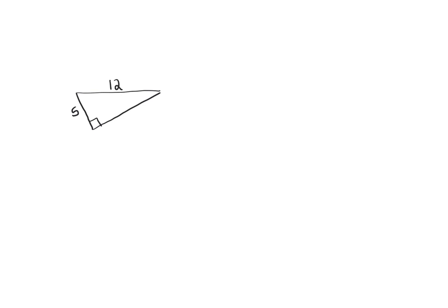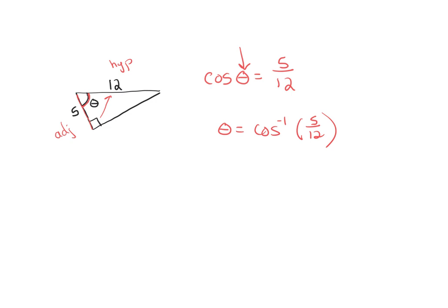Let's do one more. Draw a right triangle — this side length is 5, this one is 12 — and we want to find this angle measure. In relationship to the angle, we have the adjacent side, and this side is across from the right angle so we have the hypotenuse. Adjacent and hypotenuse is cosine, so cosine of theta equals 5 over 12. To isolate this we take the inverse cosine of 5/12, and you will get about 65 degrees.